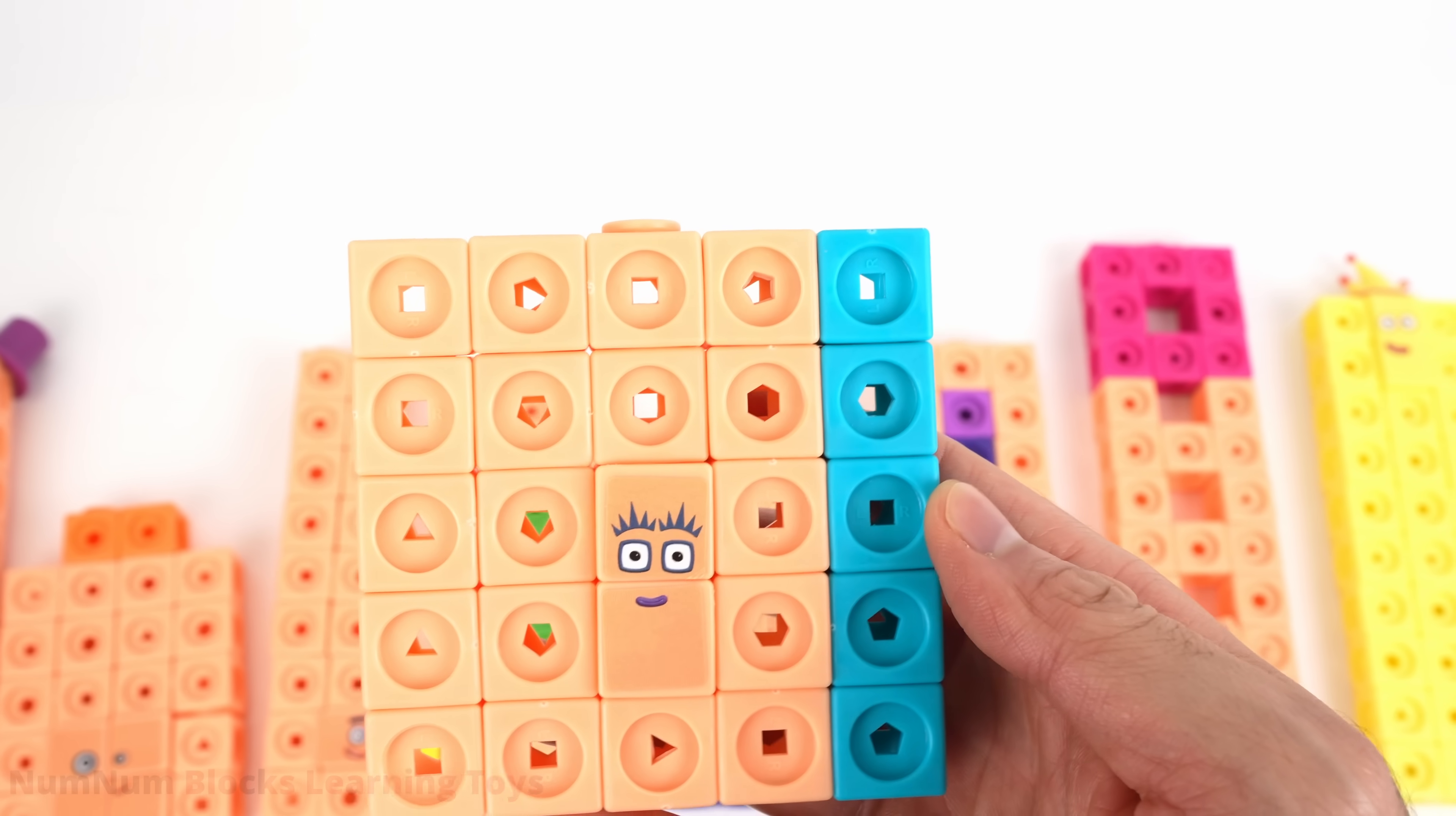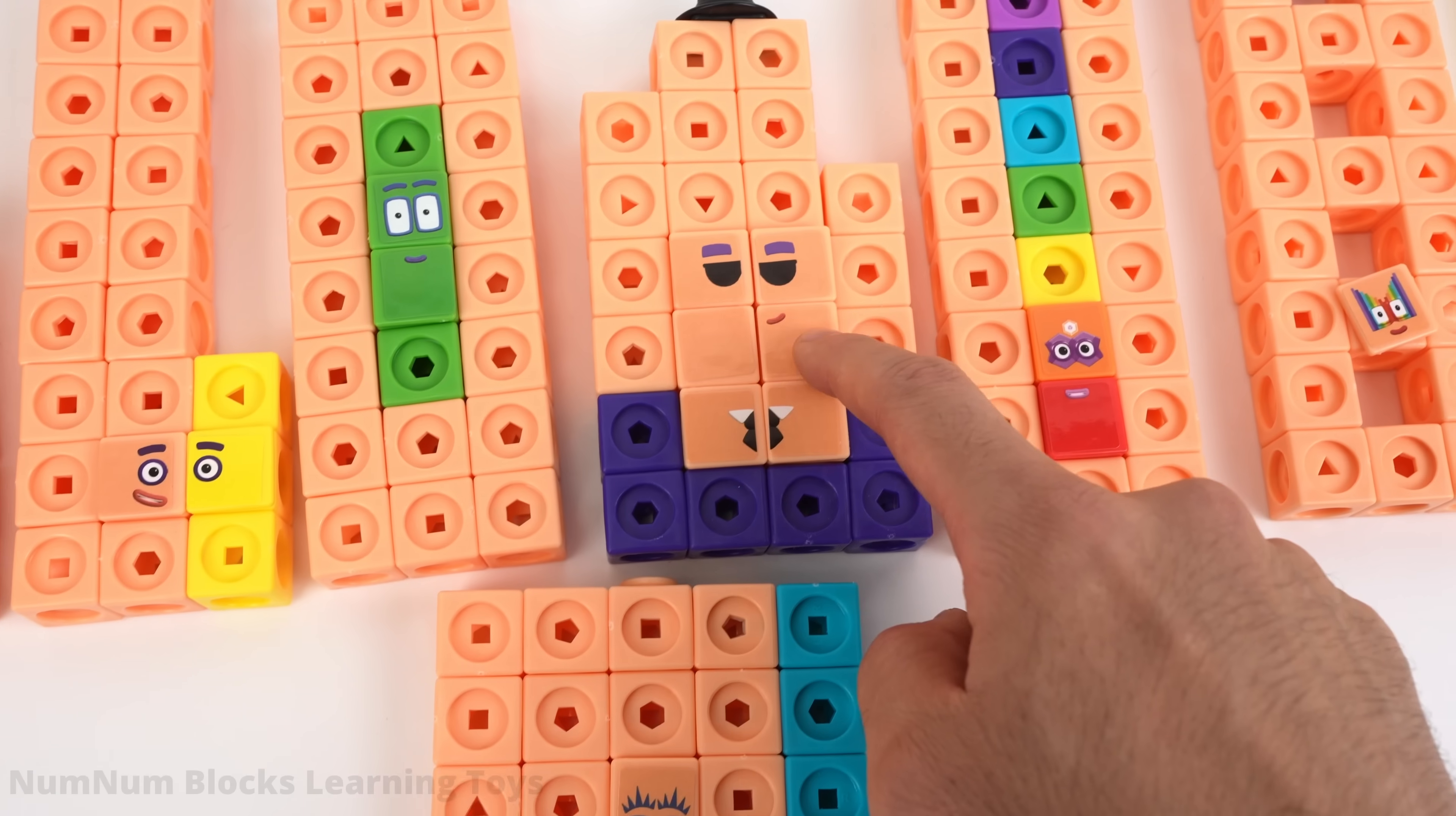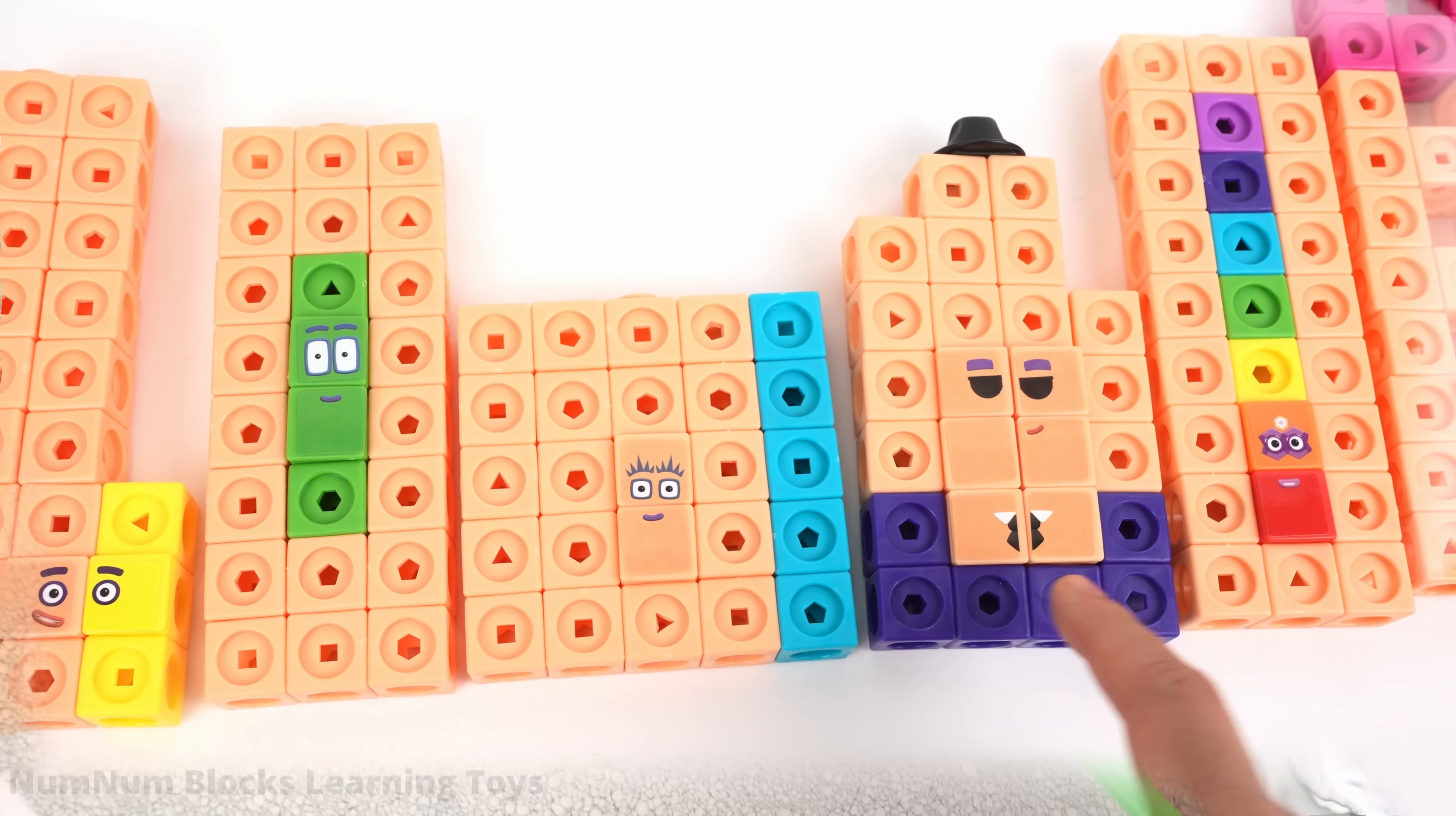Where does 25 go? At the far right? At the far left? Or somewhere in the middle? That's right. 25 is somewhere in the center of this set of numbers. 25 is in between 24 and 26.